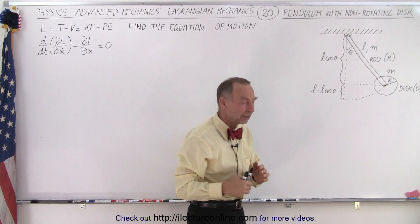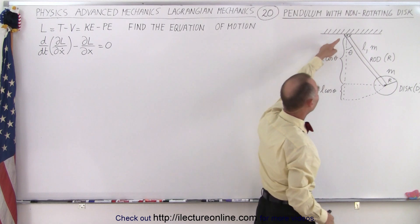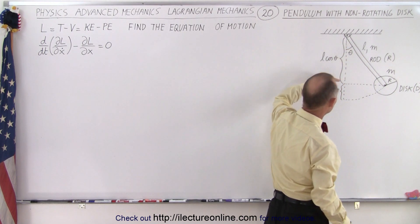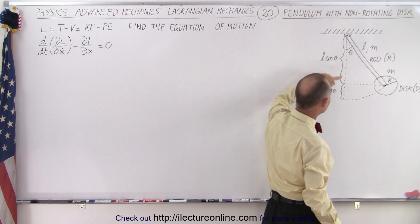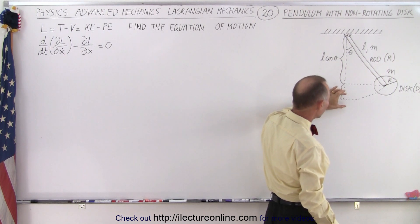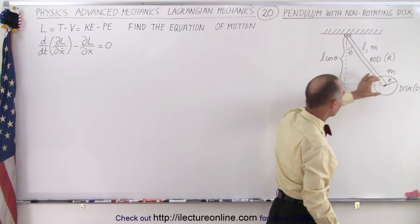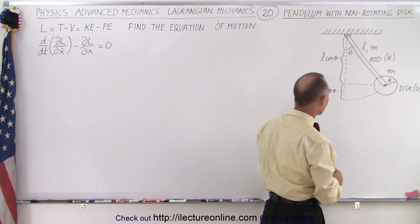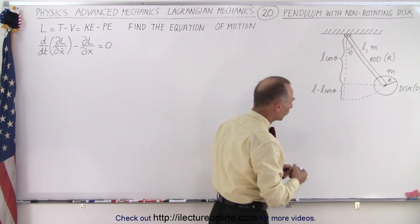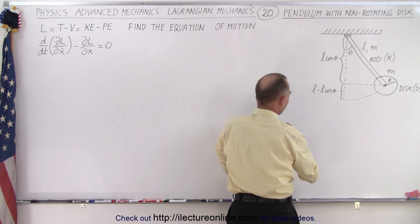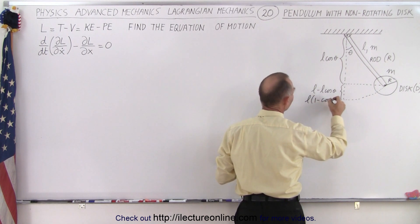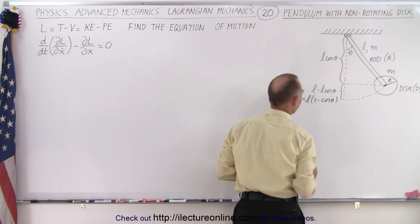To give us a hint already: if this is the length of the bar and this is the angle theta, then this distance from there to there is L cosine theta. The height from the lowest point to some other point, based on the angle theta, can be described as L minus L cosine theta, or equivalently L times (1 minus cosine theta).